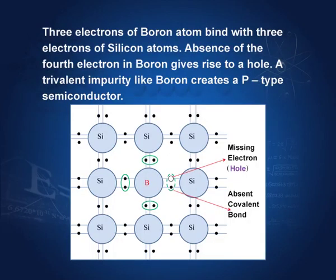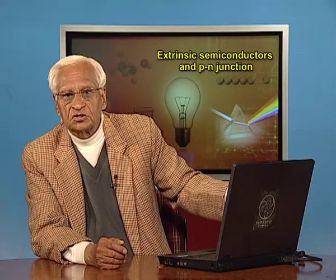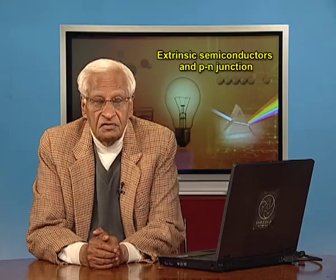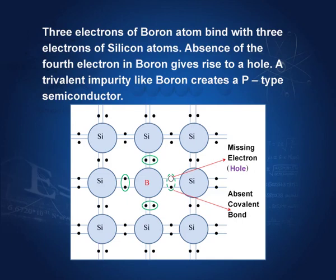Let us go back to the silicon structure. Four outermost electrons for each silicon atom — when it is intrinsic, no impurity. Now, you add an impurity like boron. Its three electrons are paired by covalent bonds with the electrons of the outermost shell of silicon, but the fourth bond cannot be formed because there is no fourth electron in boron. Therefore, this leaves a vacancy for an electron, which we call a hole — a missing electron. So, a trivalent impurity like boron creates a p-type semiconductor.